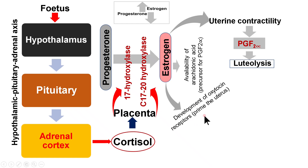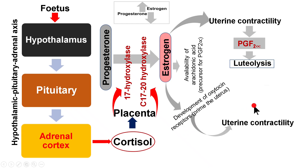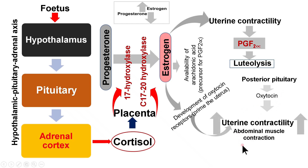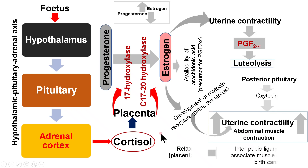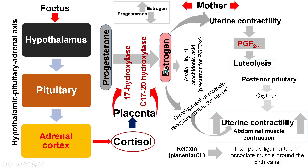Estrogen also provides a precursor for PGF2α, that is arachidonic acid. Estrogen also primes and prepares the uterus for oxytocin by causing development of oxytocin receptors in uterine cells. When oxytocin is released from the posterior pituitary, it acts upon the uterus as well as abdominal muscle, increasing their contraction. Additionally, relaxin released from the placenta or corpus luteum causes relaxation of the inter-pubic ligament and associated muscles around the birth canal.